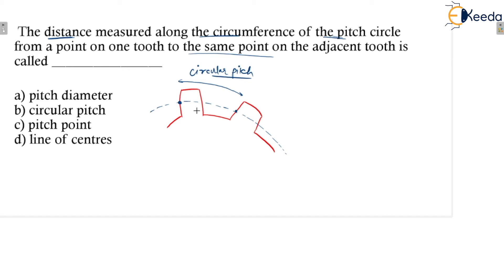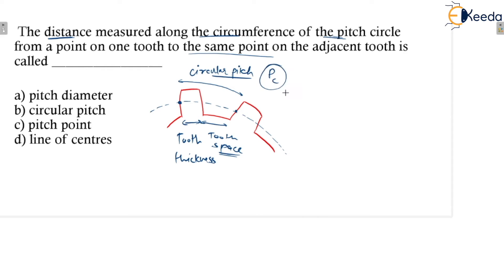That distance along the circumference is called circular pitch, and it is the summation of tooth thickness and tooth space. The circular pitch is denoted as PC. For mating gears, circular pitch is the same, meaning PC1 equals PC2, which equals pi times module. So modules are equal for mating gears: M1 equals M2. Therefore option B is the correct answer.